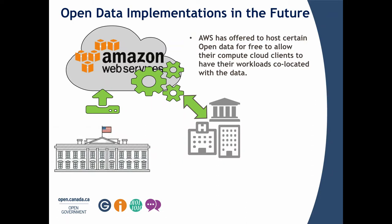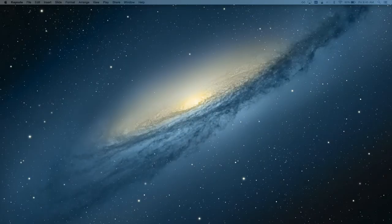One leading-edge practice from the US government is co-locating datasets where people do cloud computing. When working with huge file sizes like satellite imagery or DNA genomics data, it's very difficult to download and analyze on a desktop. Amazon has partnered with the US government to host popular datasets for free in their cloud, so cloud compute clients can have that data co-located with their workloads. We're not doing this yet, but it's something we'll be exploring as we mature.